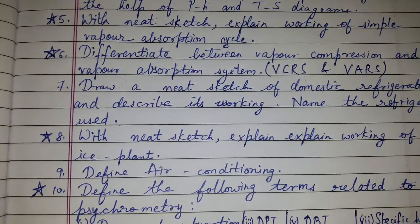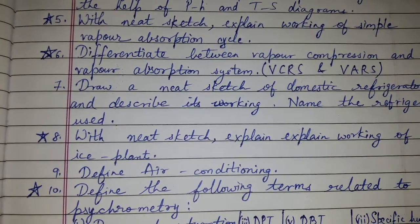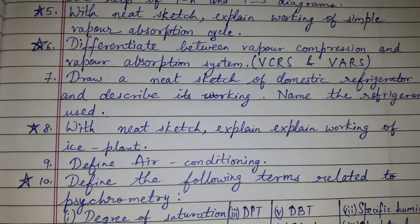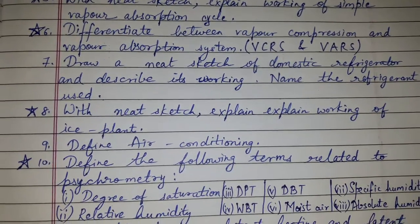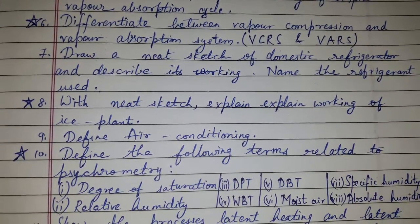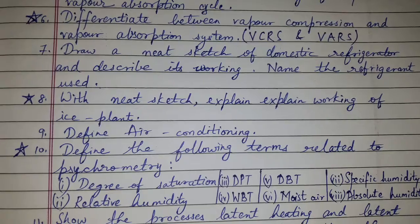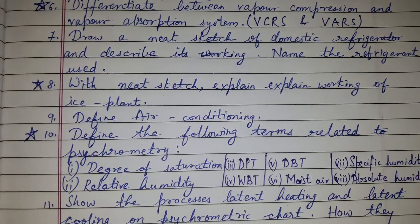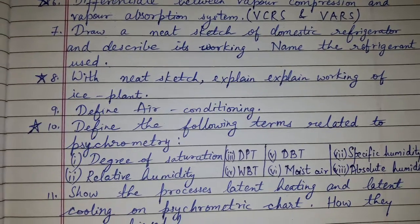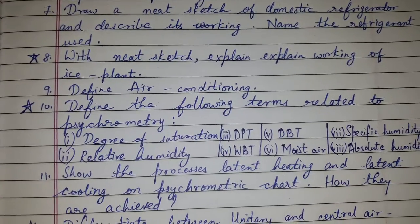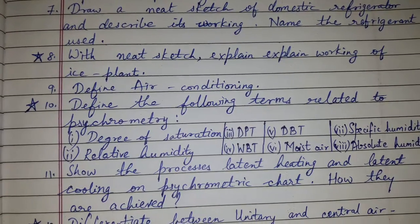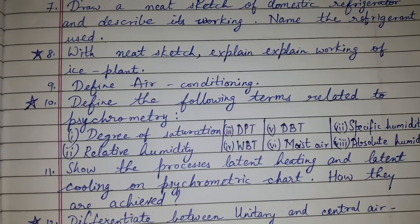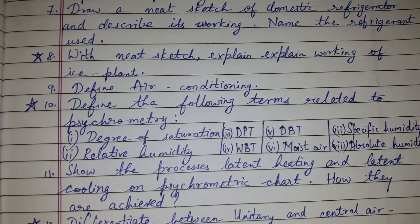Draw a neat sketch of a domestic refrigerator and describe its working, naming the refrigerant used. With a neat sketch, explain the working of an ice plant. Also, define air conditioning and define the following terms related to psychrometry: degree of saturation, relative humidity, DPT, and WBT.